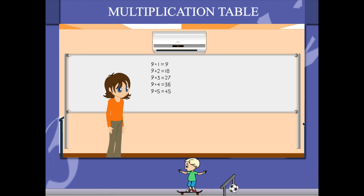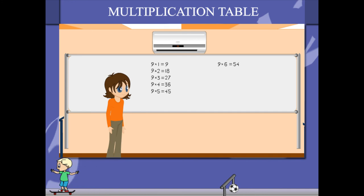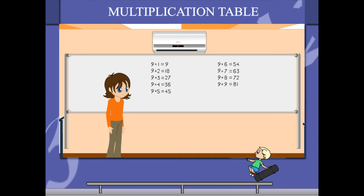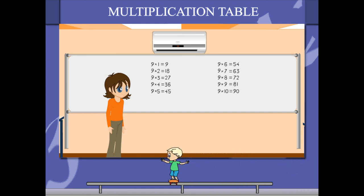9 5's are 45, 9 6's are 54, 9 7's are 63, 9 8's are 72, 9 9's are 81, 9 10's are 90.